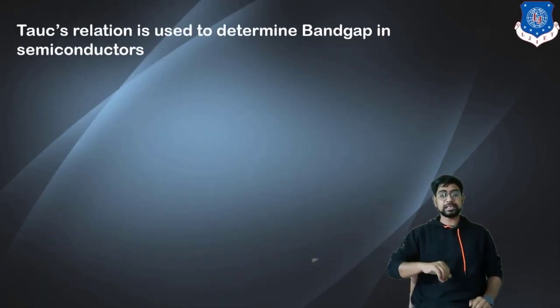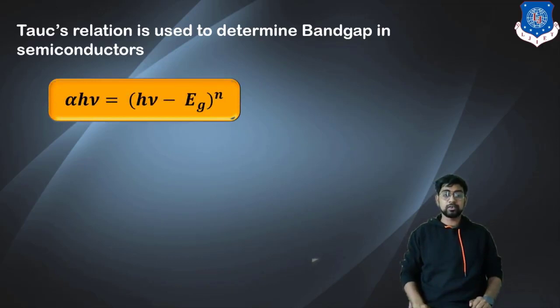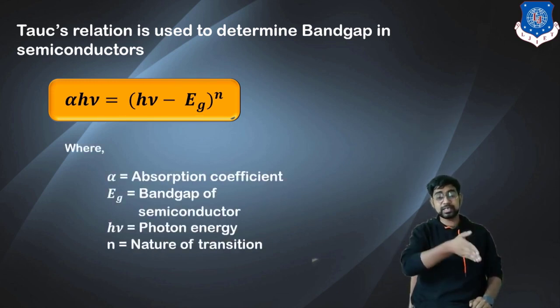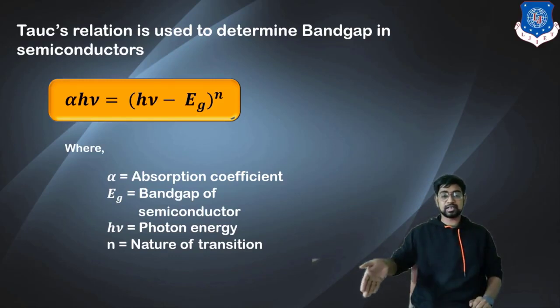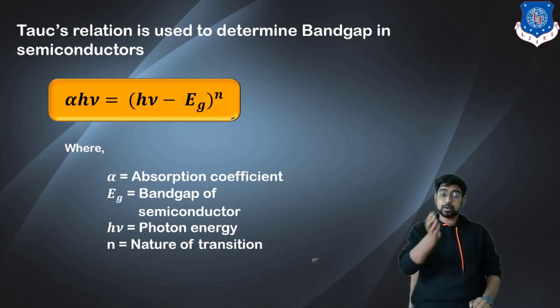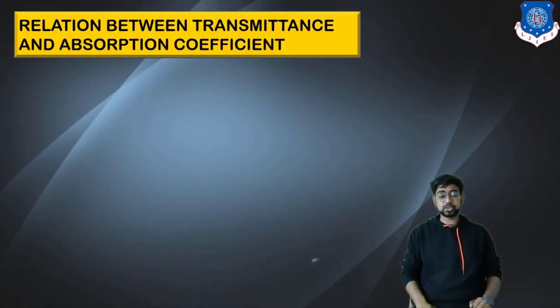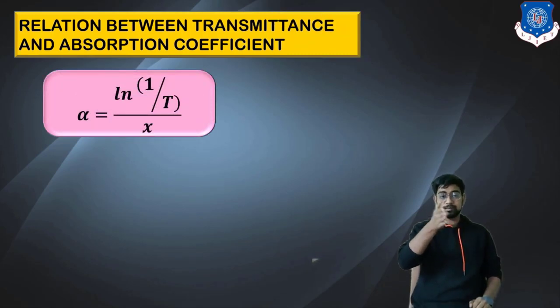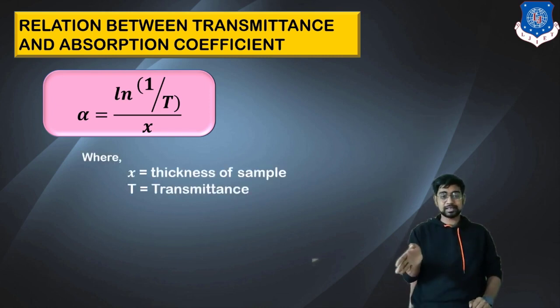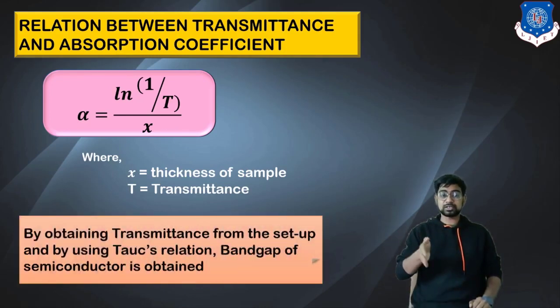Tauc's relation is used to determine the bandgap. αhν = (hν - Eg)^n, where α is the absorption coefficient, Eg is the bandgap of the semiconductor, hν is the photon energy, and n is the nature of transition. From the transmittance and absorbance we get the absorption coefficient. The relation between transmittance and absorption coefficient is given as α = ln(1/T)/X, where X is the thickness of the sample and T is the transmittance. By obtaining the transmittance of the setup using the Tauc relation, we'll be getting the bandgap of the semiconductor.